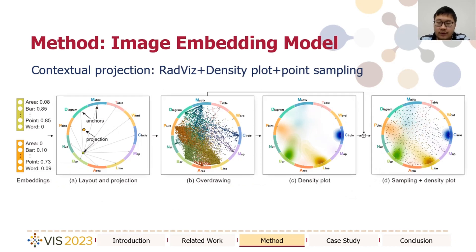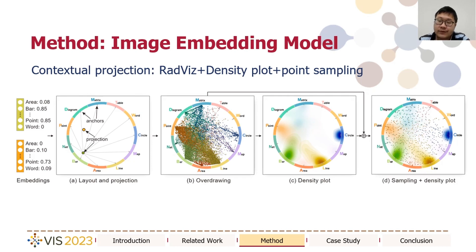Particularly for the contextual projection, we first use the RADVIS method, which is the string-based radial layout method, projecting each data point in relation to the dimensions representing different visualization types. However, because of the large scale of visualization collections, there can be severe over-drawing problems. To address this, we propose to combine the density plot with point sampling in this contextual layout. In this way, we can allow for both an overview of the distribution and exploration of typical data points.